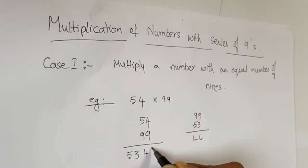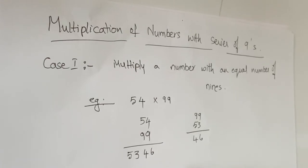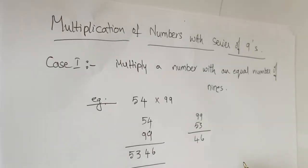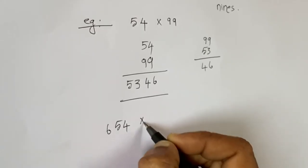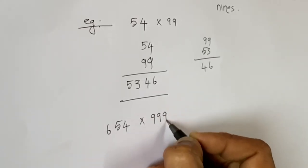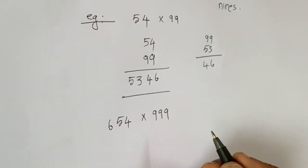So the right hand side is 46. The answer is 5346. So how simple it is! Same way we can take a three-digit number, like 654 multiplied by 999.